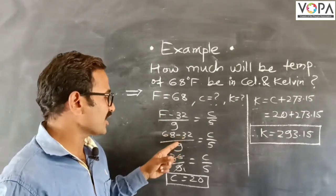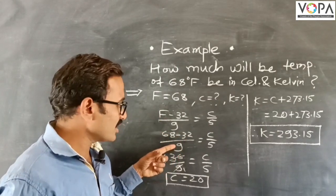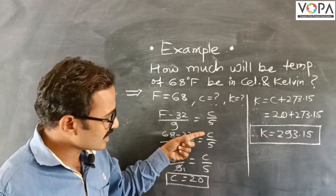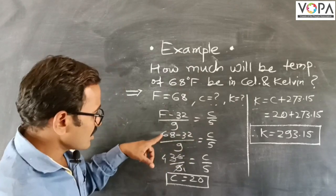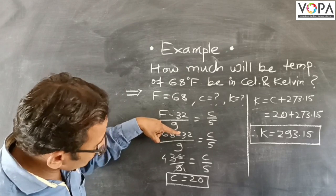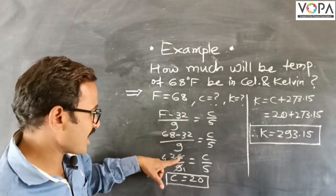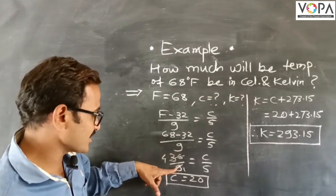68 minus 32 divided by 9 is equal to C divided by 5. Here, 68 minus 32 is equal to 36, and 9 stays as is.